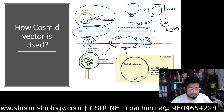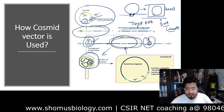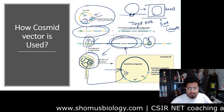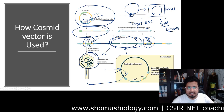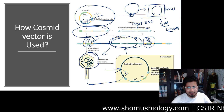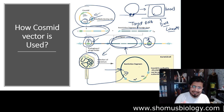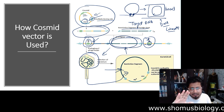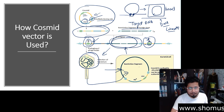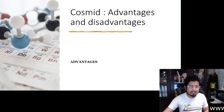Once packaging is complete, the phage head contains the target DNA and can infect bacterial cells quite easily. Once it infects the bacterial cell, the DNA is transferred inside, where it can self-ligate or recombine with the bacterial genome. The biggest advantage of this process is that we are utilizing the bacteriophage lambda for delivery — this is a natural, highly effective process.